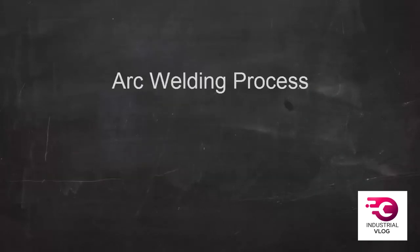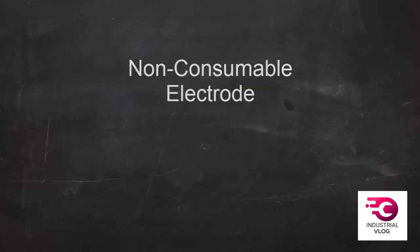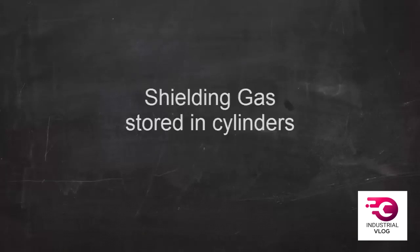So in summary, TIG welding is an electric arc welding process. It uses a non-consumable tungsten electrode. The filler metal is added separately in the form of filler rod, and the shielding gas comes from a high-pressure cylinder.